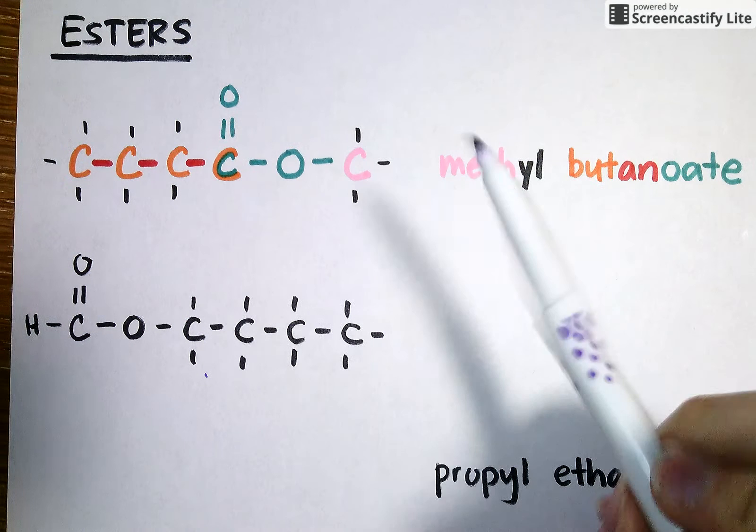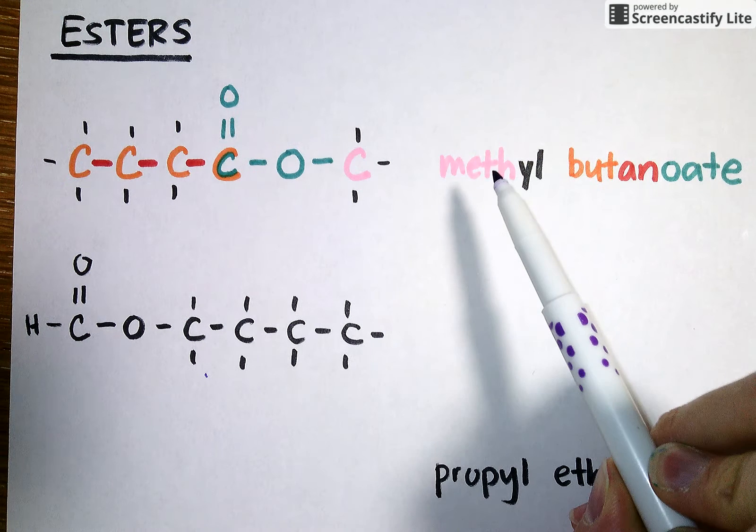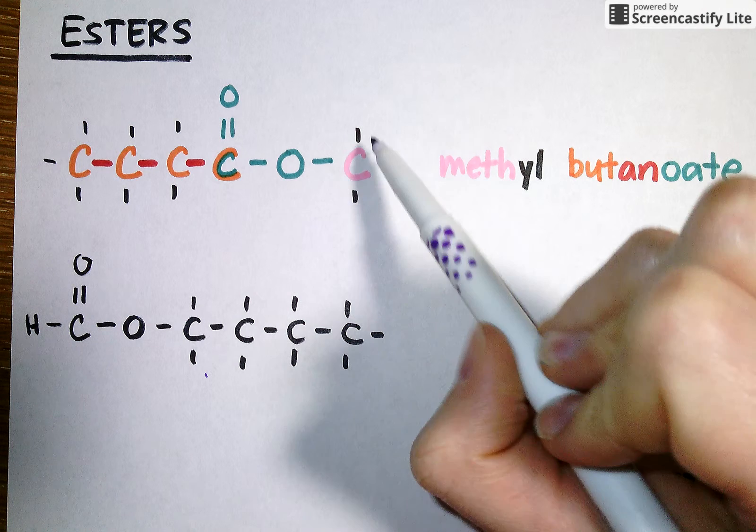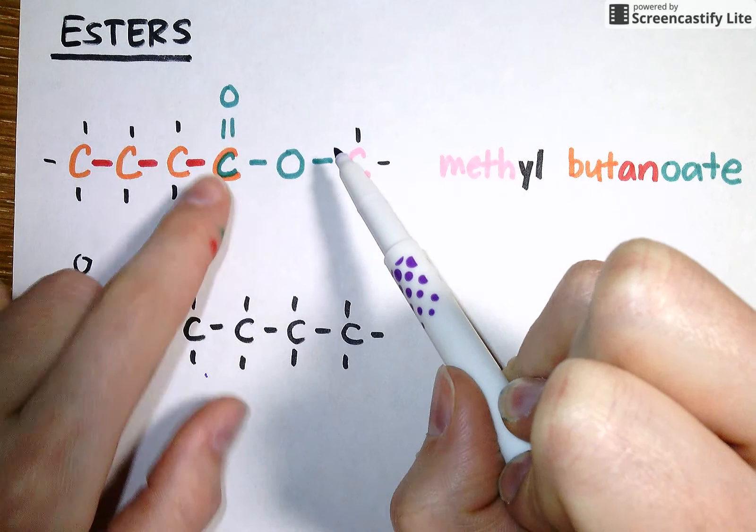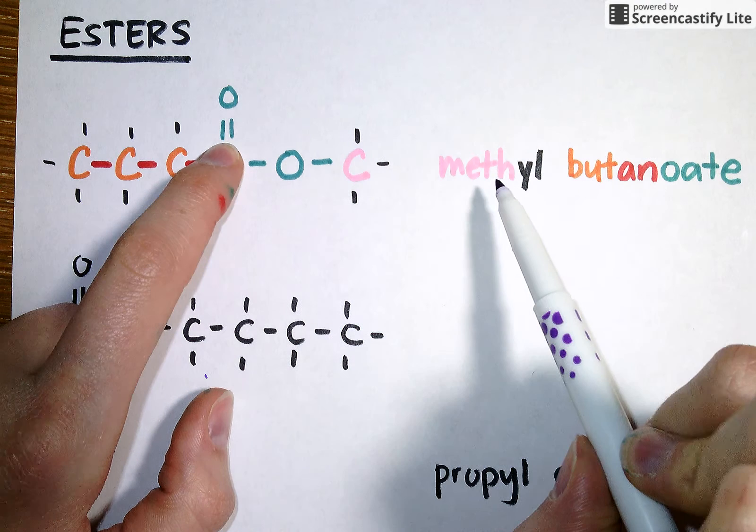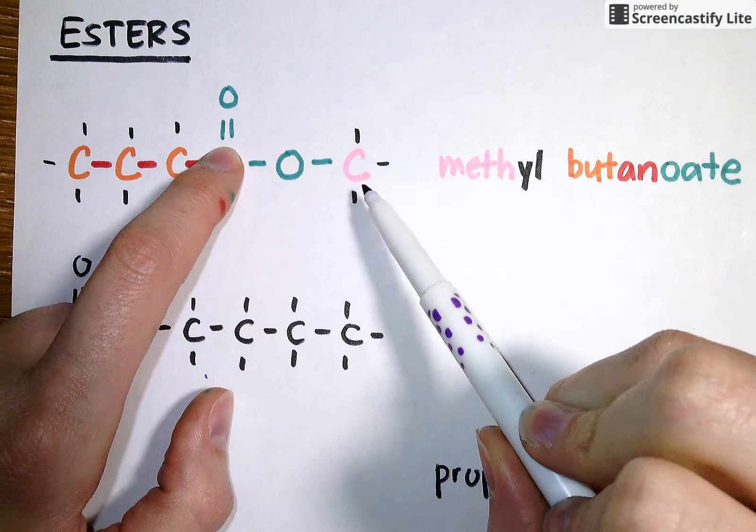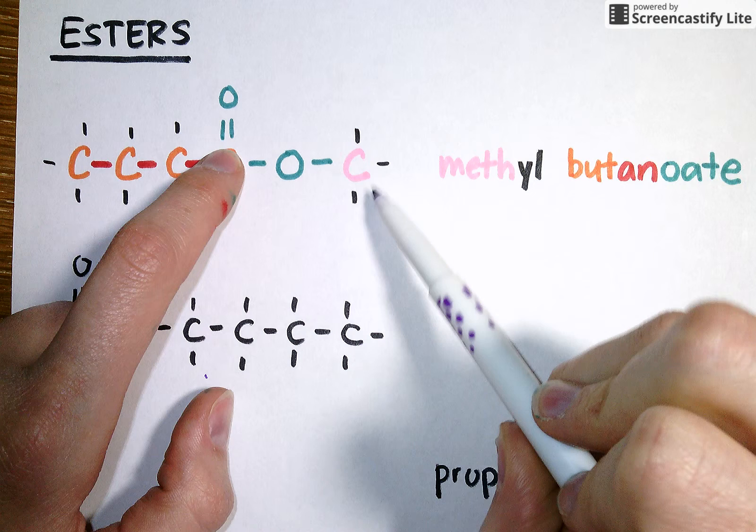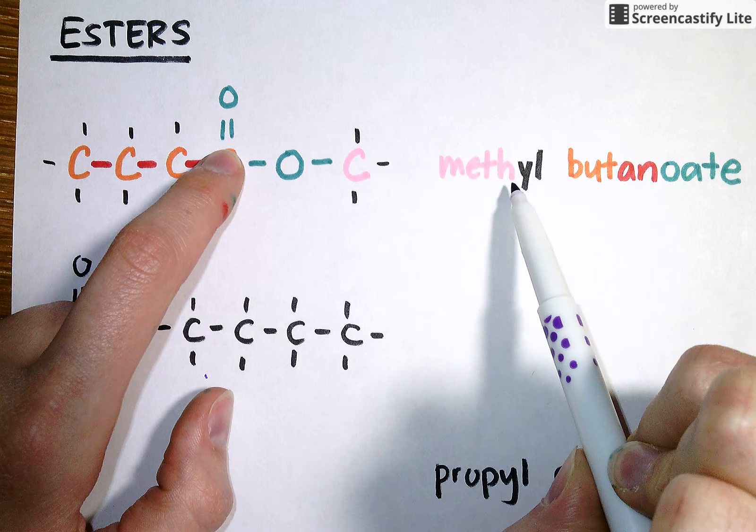Now in the name, notice that the pink comes first. So whatever isn't attached to the double bonded O is the prefix that's going to come first. So my one carbon methyl attachment is the first part of the name.